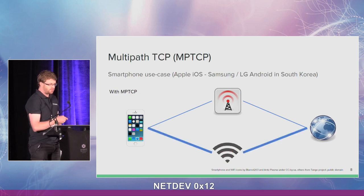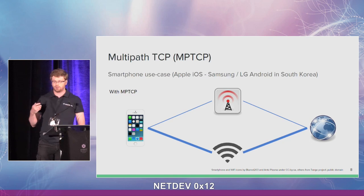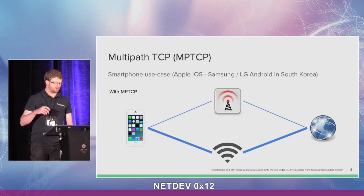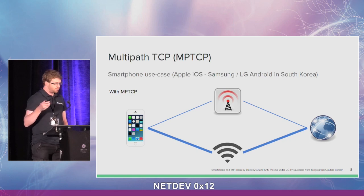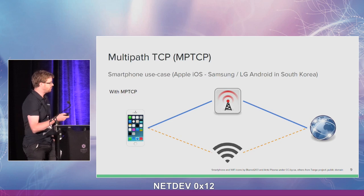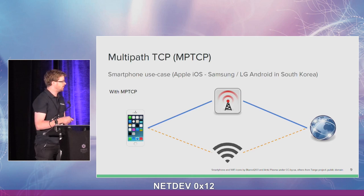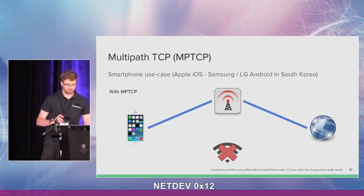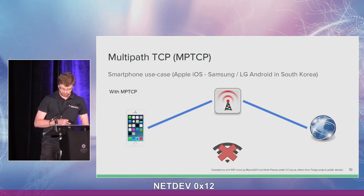Thanks to Multipath TCP, you can have two TCP connections under one MPTCP connection — one over Wi-Fi, one over the cellular network. Without Multipath TCP, if you get disconnected from Wi-Fi, you need a new connection to retransmit the data. With MPTCP, if you lose the Wi-Fi, packets can directly go over the cellular network. It's transparent for the user.